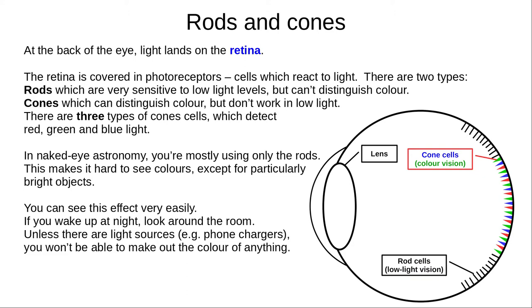This is a bit of a simplification, but it's good enough for the astronomy GCSE. In naked eye astronomy the light levels are very low, so you mostly use only rod cells. This makes it hard to see colours, except for bright objects such as Mars, which appears slightly red.